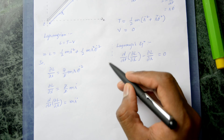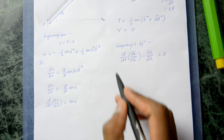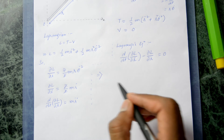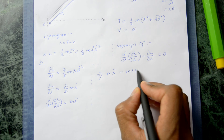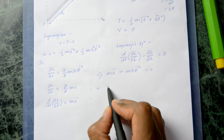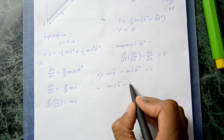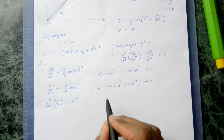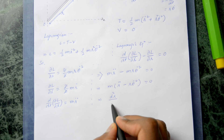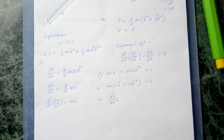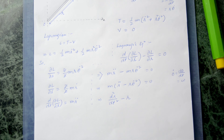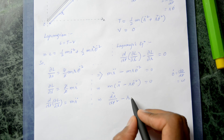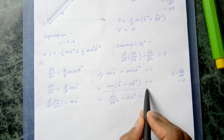Substituting into the Euler-Lagrange equation gives m·R̈ - m·R·θ̇² = 0. Dividing through by m, and noting that θ̇ = omega, the equation of motion becomes d²R/dt² - R·ω² = 0. This gives us the radial equation of motion for the particle.